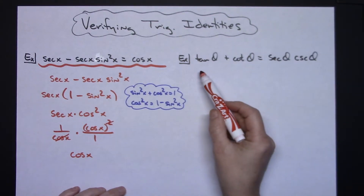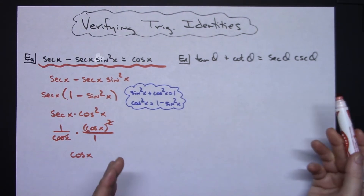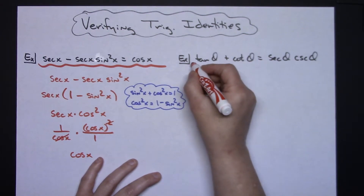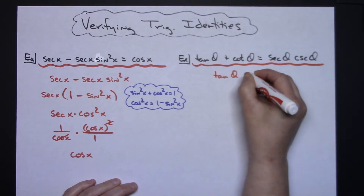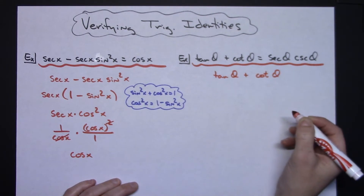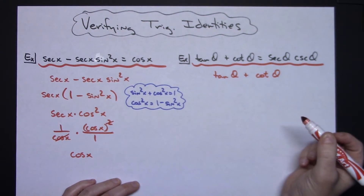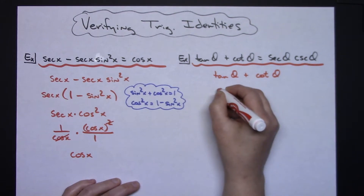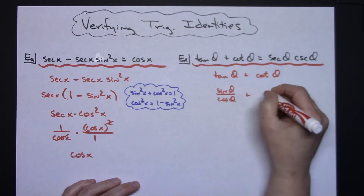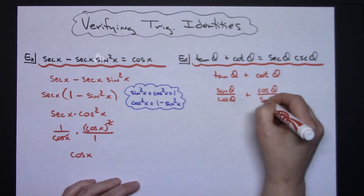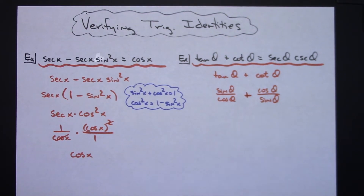Now for this next one: tangent theta plus cotangent theta equals secant theta times cosecant theta. Here again you could start with either side, but I'm going to choose to start with the left side. A pretty common approach when you've got tangent and cotangent is to substitute their equivalent quotient identities. So tangent is sine theta over cosine theta, and cotangent is its reciprocal — cosine theta over sine theta.